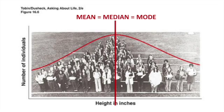As touched on in video one, a normal distribution is where the mean, median and mode are all the same and the data distributed forms a symmetrical view around this axis — this is called a normal or Gaussian distribution. We can see here that a group of people are lined up in height order and each of the groups lined up are at the same rough height to each other, forming a normal distribution — but more on that later.